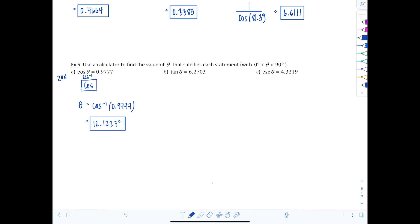Same thing here. We have tangent θ equals 6.2703, so θ is going to equal tan inverse of 6.2703. Your tan inverse key should be right near where tangent is, and you should get 80.9387 degrees.